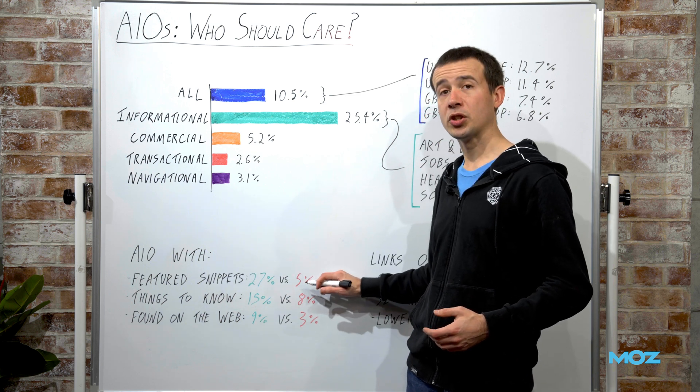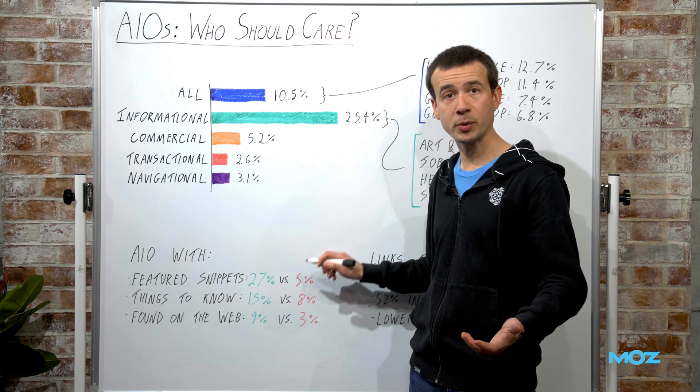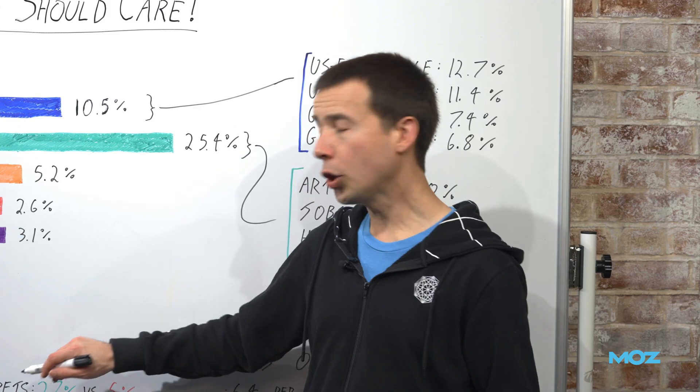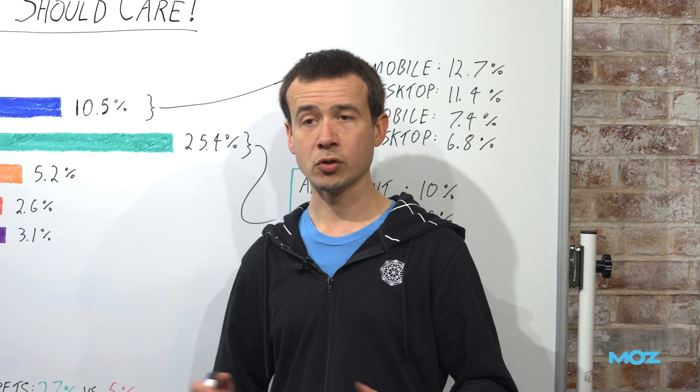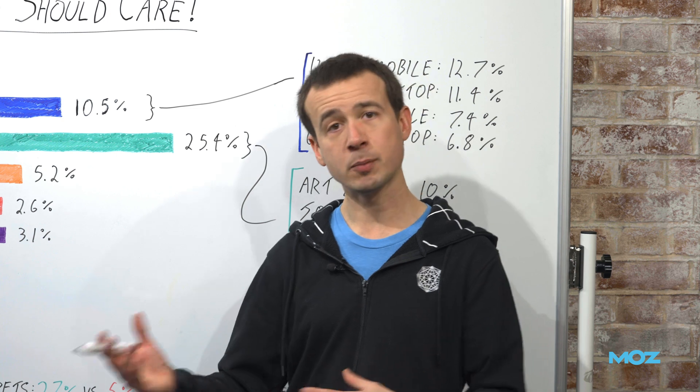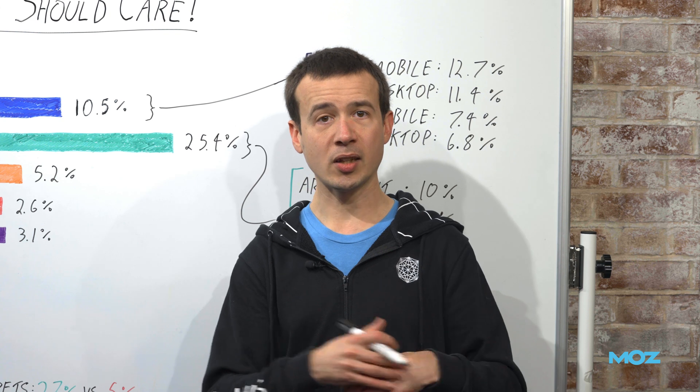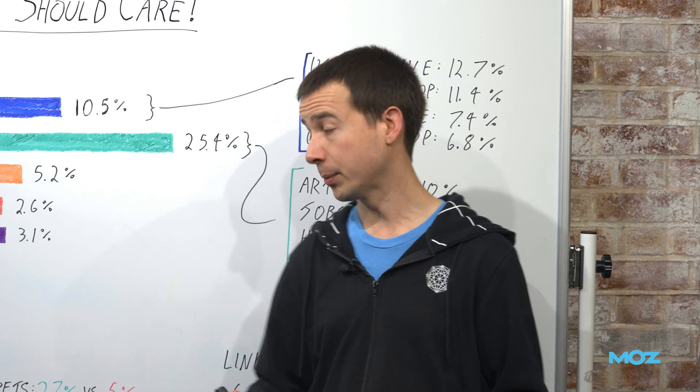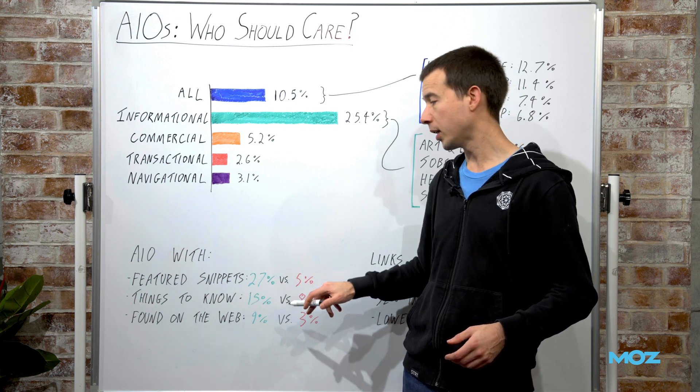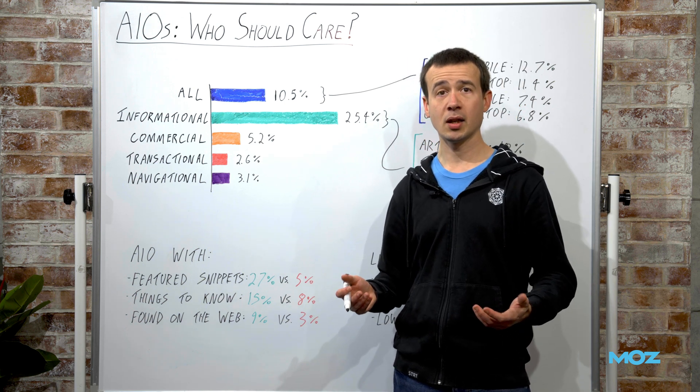That compares to 5% more generally. So 5% of searches without an AI overview had a featured snippet. I've put in these red numbers to contextualize what the normal percentage would be. It's far more common to have a featured snippet when you do also have an AI overview. The other two features, things to know, about twice as common on AI overview searches as otherwise, and found on the web, about three times as common. These are both features that speak to a research-based intent.